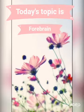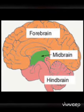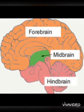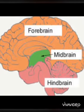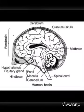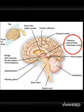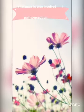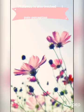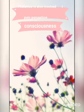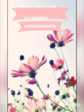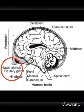Today we are going to discuss the forebrain. The forebrain is the largest area of the brain and is most highly developed in humans. An important part of this region is the thalamus. The thalamus lies just below the cerebrum and serves as a relay center between various parts of the brain and spinal cord. It is also involved in pain perception, consciousness, sleep, and awakening.